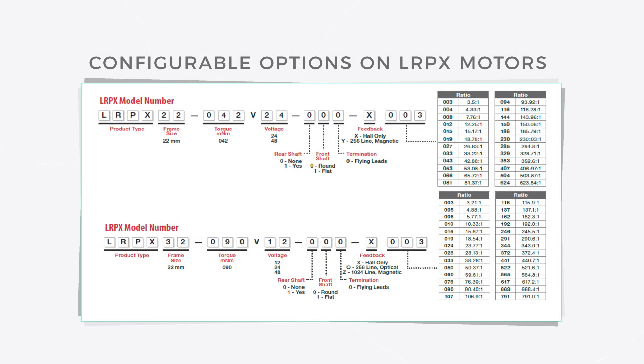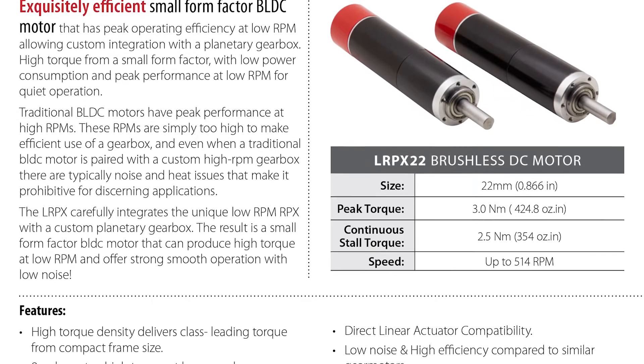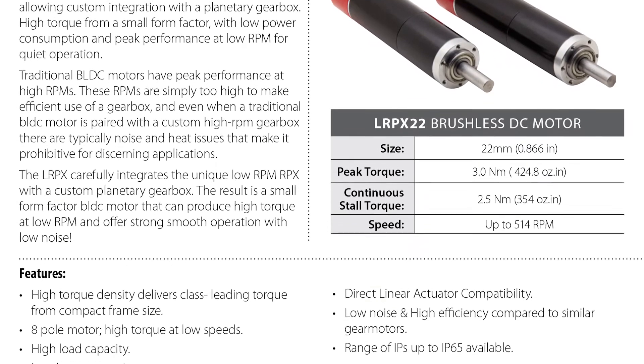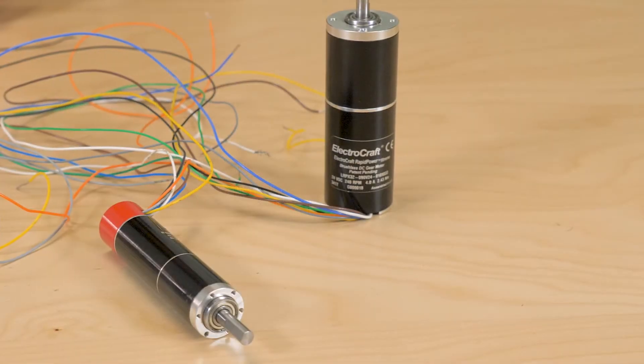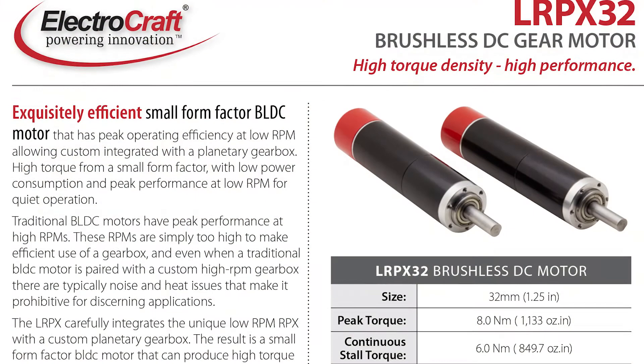Check out the samples we have here. The LRPX 22 and 32 are encapsulated for quiet and cool performance. They're built with optional IP65 protection to shield against dust and liquid penetration, and they can operate in settings with temperatures from minus 42 to 155 degrees Celsius.